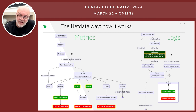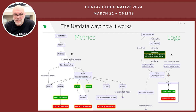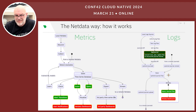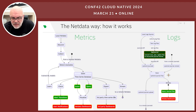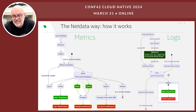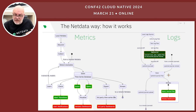SystemD Journal was designed first to be secure, with sealing, tamper detection, and many security features. At the same time, it scales independently of the number of fields. The only drawback with huge cardinality is disk footprint — not CPU, not memory. So what we do in NetData is query journal files directly without storing or moving the logs to another database server. We rely on SystemD Journal itself.